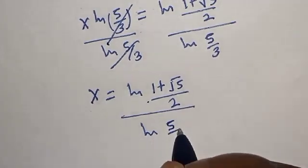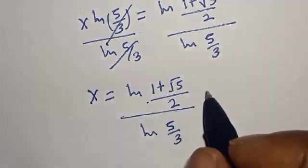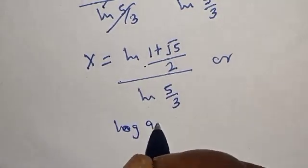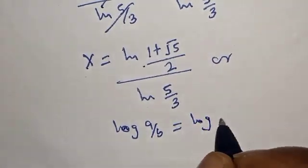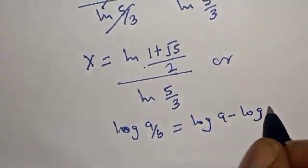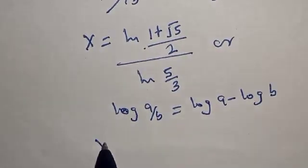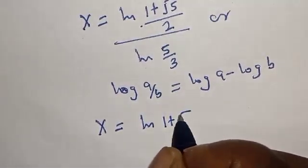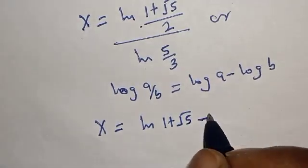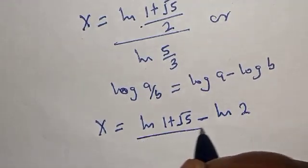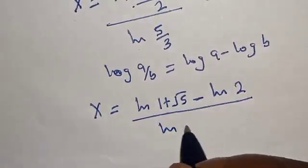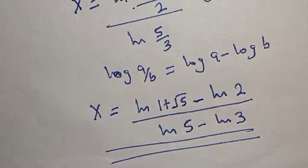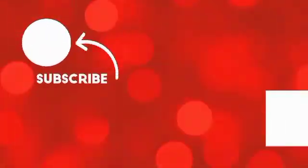Divided by natural log of (5/3). That is our answer. Using the property that log(a/b) equals log a minus log b, we can also write s equals natural log of (1 plus root 5) minus natural log of 2, all over natural log of 5 minus natural log of 3. Before you leave, like, share, comment, and subscribe. Thank you, bye bye.